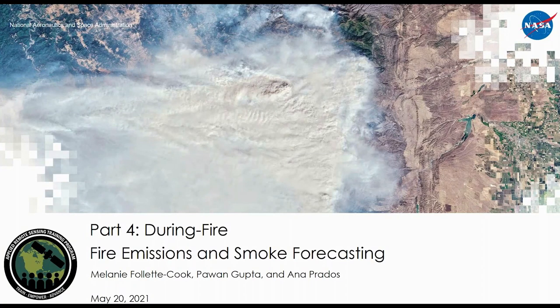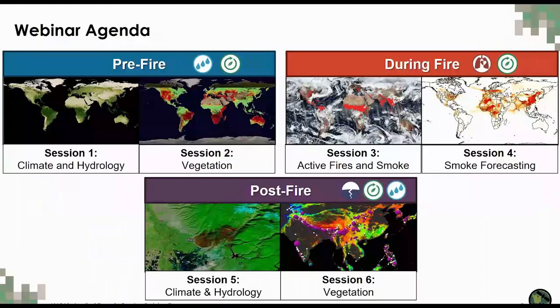Hello everyone, and welcome to part four of our RSET webinar series, Satellite Observations and Tools for Fire Risk Detection and Analysis. Here's a reminder of our webinar agenda. Last week we had two sessions on pre-fire conditions related to climate, hydrology, and vegetation. Session three this past Tuesday, Drs. Pawan Gupta and Anna Prados covered the different ways fire is detected by satellite, as well as several available smoke and aerosol datasets.